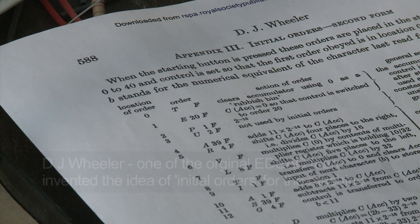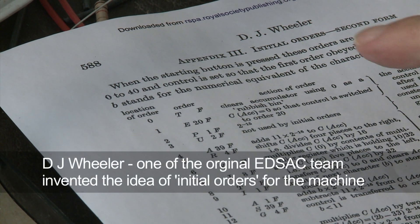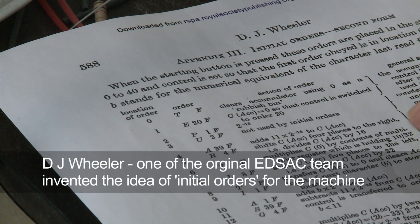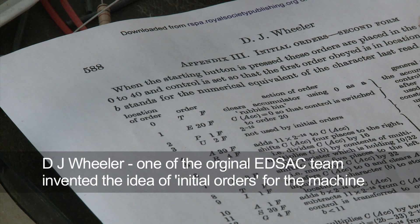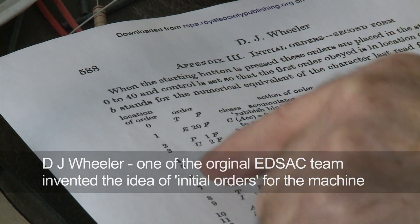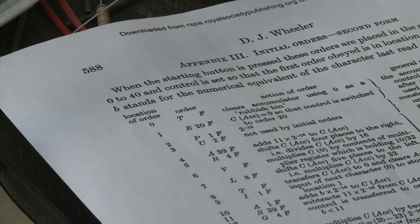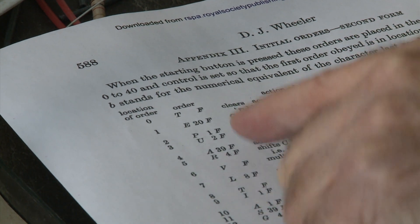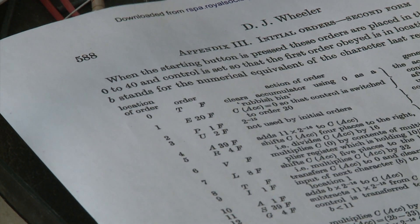This is an appendix to a paper by Wheeler and it contains the initial orders number two. These are the instructions coming down the side, this is the location instruction, and this column is the actual instruction itself. The instructions in the machine basically consist of one letter followed by a number, and then there's one other digit that says whether it's a small number or a large number.